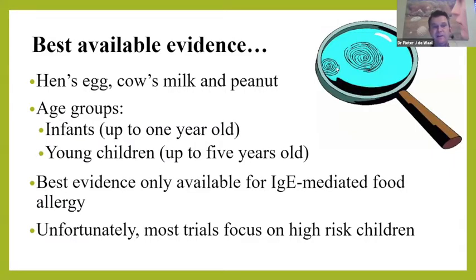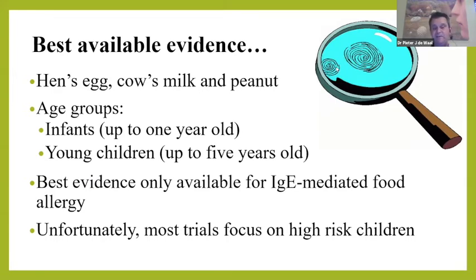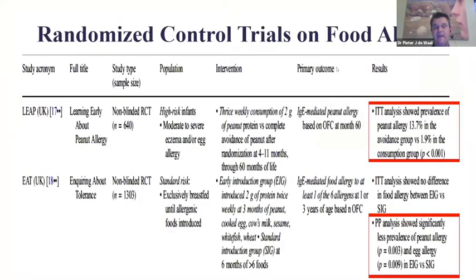When seeing a child with a disrupted skin barrier — eczema — it's important to aggressively treat that eczema to prevent ongoing allergen exposure. We now have good evidence for egg, milk, and peanut prevention before one year of age, specifically for IgE-mediated food allergy in high-risk children. There is no robust evidence for preventing non-IgE-mediated disease.